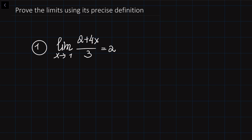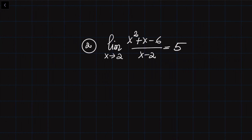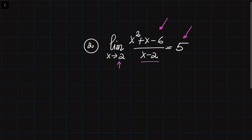The first example is where we are going to prove that the limit of this function is equal to 2 as x approaches 1. We are also going to discuss a second function and prove that it approaches 5 as x approaches 2. This second problem is going to be a little bit difficult because this function simply doesn't exist at x equals 2.